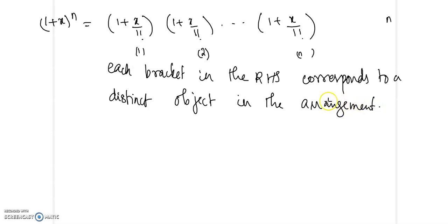That is how we obtain the generating function for the number of permutations of n different objects taken r at a time. Now let us look for the number of permutations of identical objects.